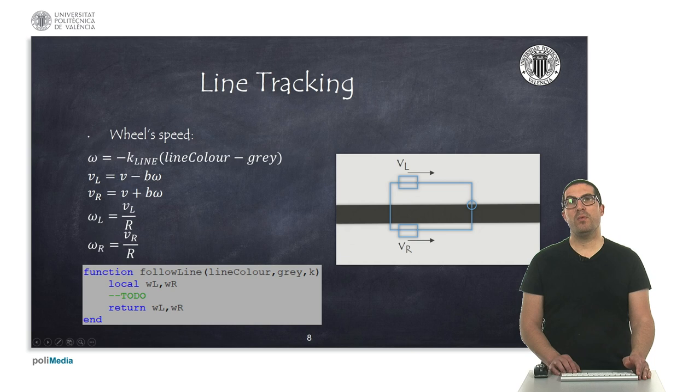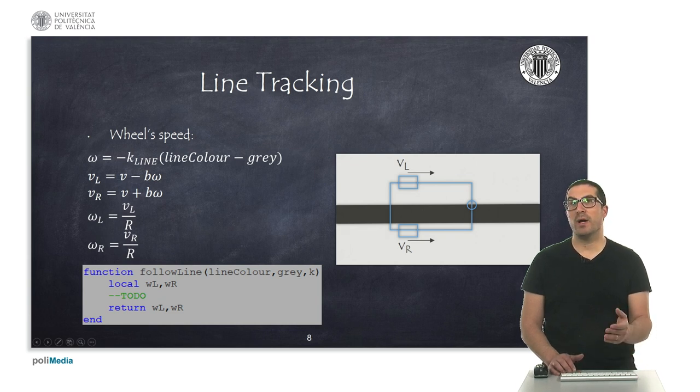And therefore, a simple way to implement a line tracking algorithm is to compute the difference between the current measured color, which is represented by the variable lineColor, and the reference value, which is the variable gray, and that's the variable that should take the value 0.5, as said before.